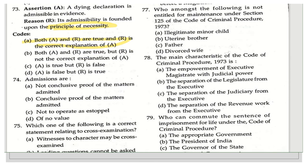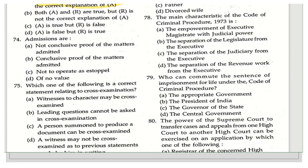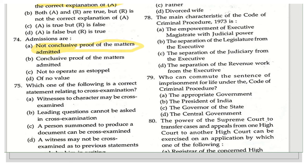The next question asks about admissions: admissions are — conclusive proof of matters admitted, not conclusive proof of matters admitted, operating as estoppel, or of no value? Section 17 talks about admissions, but an admission is not conclusive proof — it must be corroborated by other facts, statements, and evidence. The right answer is that it is not a conclusive proof of the matter admitted.